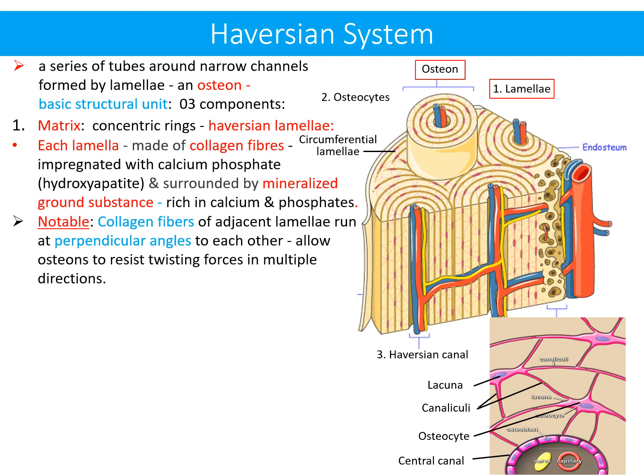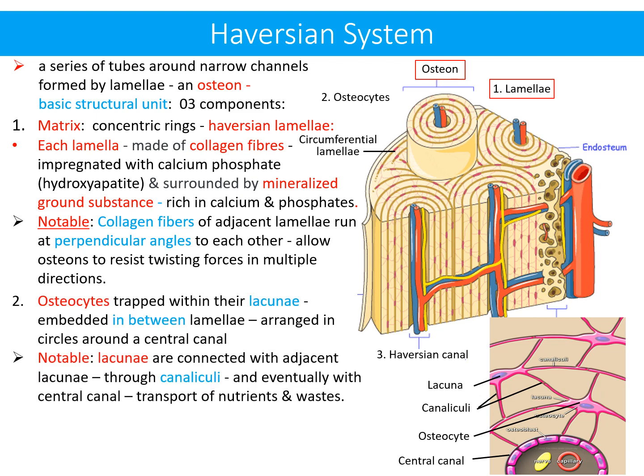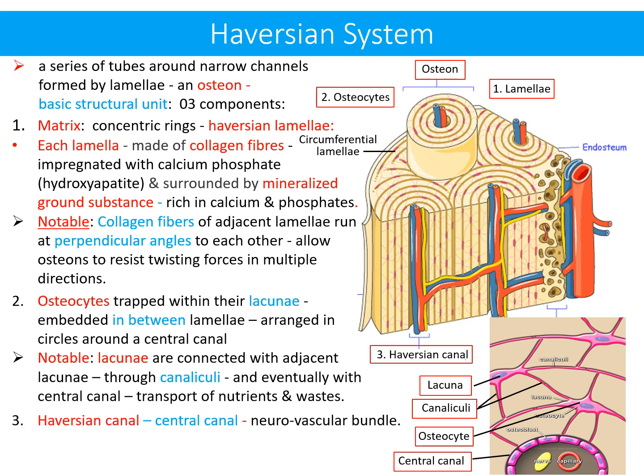Each lamella is made of collagen fibers impregnated with calcium phosphate and surrounded by mineralized ground substance rich in calcium and phosphate. Notably, collagen fibers of adjacent lamellae run at a perpendicular angle to each other, which allows osteons to resist twisting forces in multiple directions. The second component is osteocytes, trapped within lacunae, embedded between the lamellae and arranged in circles around the central canal.